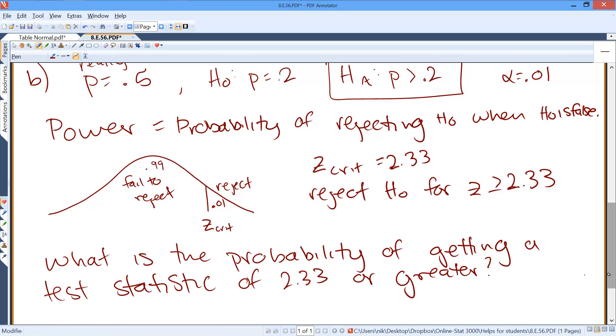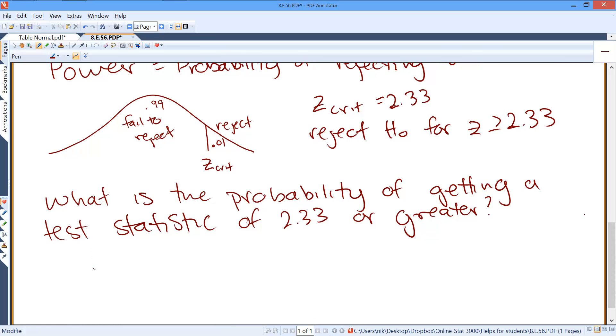Okay, to answer this question, we need to go back and figure out the formula for our test statistics. Remember, there is p-hat minus p-naught over the square root of p-naught times 1 minus p-naught over n.